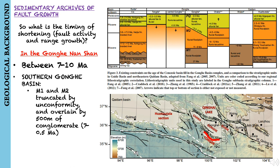In the southern Gonghe Basin, the lower stratigraphic packages M1 and M2 are truncated by a prominent unconformity, which is overlaid by 500 meters of conglomerate that dates to around 7 to 0.5 million years ago. They interpret these conglomerates to be coalesced alluvial fan deposits that were shed off high topography around the basin margins.